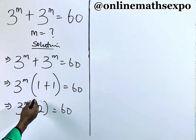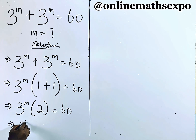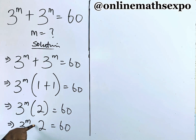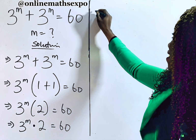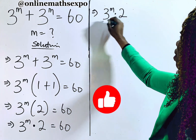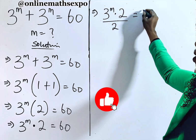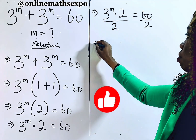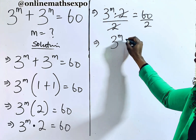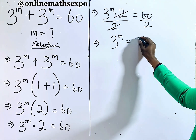Remember, to remove your bracket, it's just the same as multiplying. So we are multiplying this by 2, is equal to 60. To get our m, we need to remove this 2, and because it's multiplying, we are going to divide both sides by 2. This takes care of this — we have 3 to the power of m equals 30.